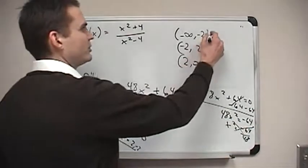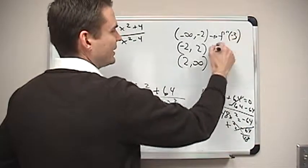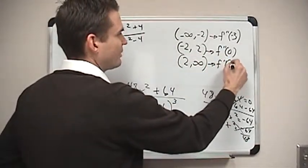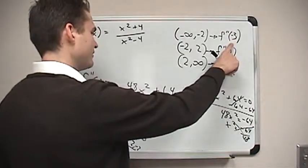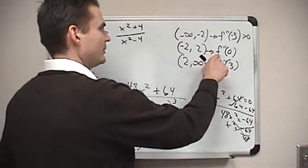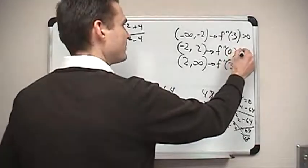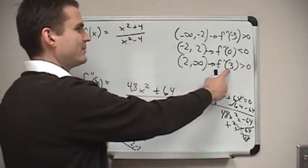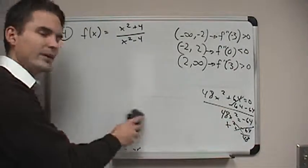From negative infinity to negative 2, negative 2 to 2, and 2 to infinity — the second derivative is either positive or negative on each interval. We need to test points in each interval. I'll test negative 3 in the first interval, zero in the second, and positive 3 in the third. The second derivative at negative 3 turns out to be positive. At zero it's 64 over negative 4 cubed, which is a negative number. And in the last interval we get a positive number again.